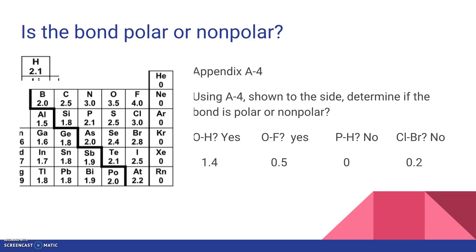What about O to F? O is 3.5, fluorine is 4.0, the difference is 0.5 — and that's our breakpoint. 0.5 or greater is different enough to be polar, so yes, that's a polar bond too. P to H, however, is between 2.1 and 2.1 — a difference of zero electronegativity. They pull equally on the electron, so that is a nonpolar bond.